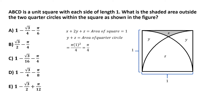Now we have two equations. If we treat them as algebraic equations and subtract the second from the first, z cancels out and we are left with x plus y equal to one minus π/4.